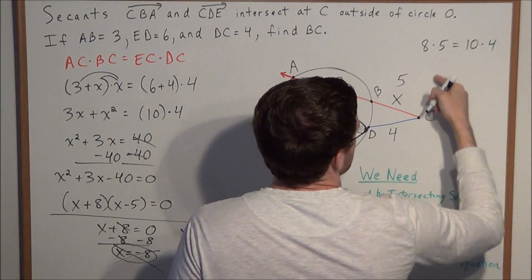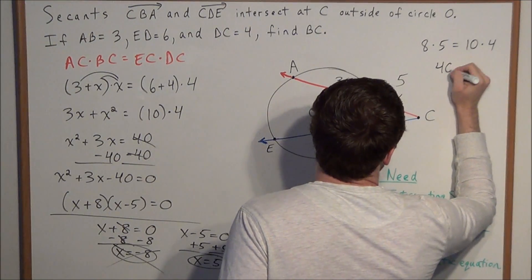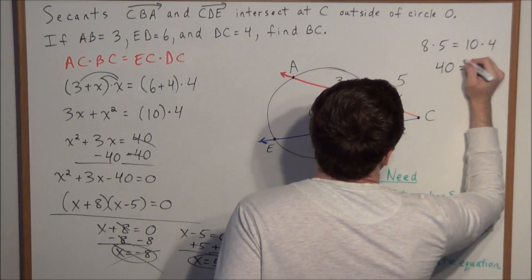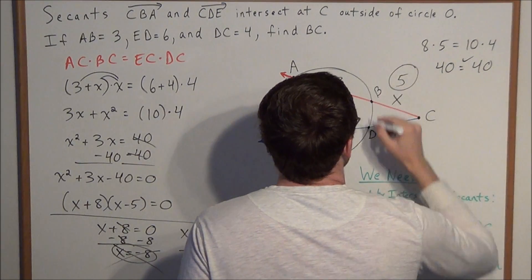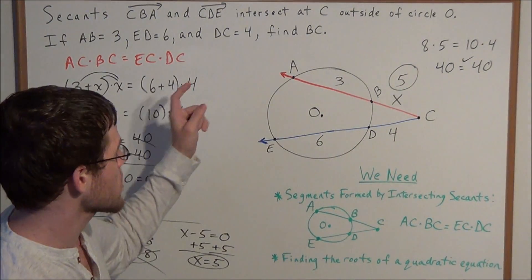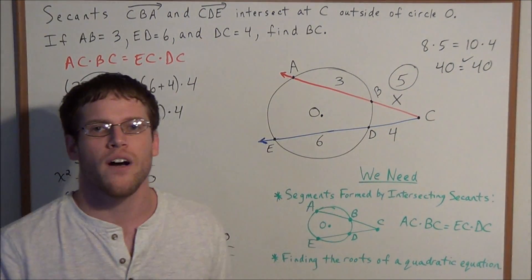When we simplify this, we have 40 on the left, and 10 times 4 is 40 on the right. So we know that this value of X checks out. The length of line segment BC equals 5.